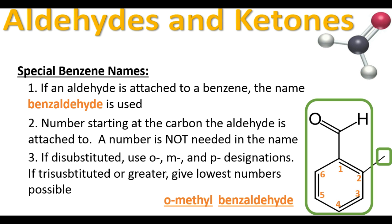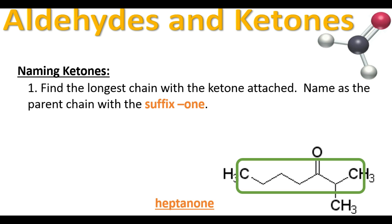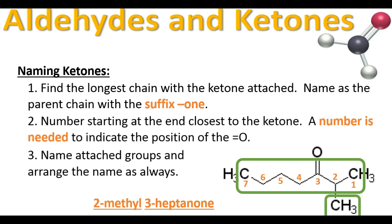Now let's move on to ketones. Notice the same double bonded oxygen, but since it's on a middle carbon, that makes it a ketone with its own naming rules. Rule one: find the longest chain with the ketone attached and name the parent chain with the suffix -ONE. Here the longest chain has seven carbons, making it a heptanone. Number from the end closest to the ketone — that's the right-hand side. Because a ketone can be on any middle carbon, you must include a number: this is 3-heptanone. There is also a methyl on carbon 2, so the final name is 2-methyl-3-heptanone.